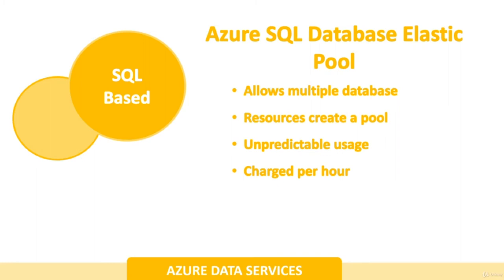Elastic pool allows multiple databases to share the same resources, similar to a SQL Server installed on a physical machine. In Azure, all resources are referred to as a pool, used only by you and not shared with other Azure users. Single databases can be added or removed from elastic pools. This model is useful when you have various databases with resource requirements that vary over time — for instance, one database active during the day and idle at night, and a second active at night. You can scale up or down and pay for resources consumed.